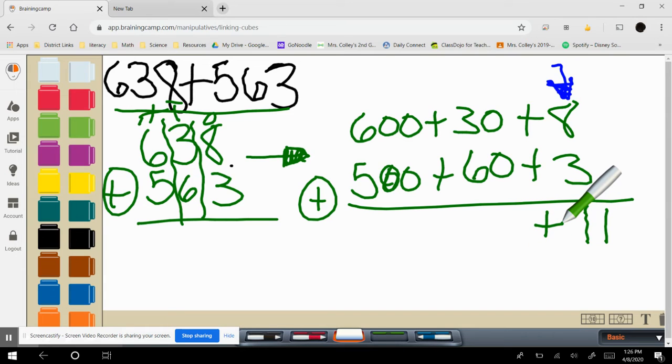30 plus 60. Well, 6 and 3 is 9, so it's 90. Bring down my plus sign. We know 5 and 5 is 10, so one more is 11. So 1100.